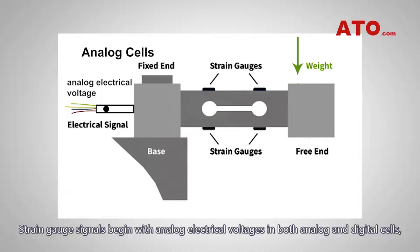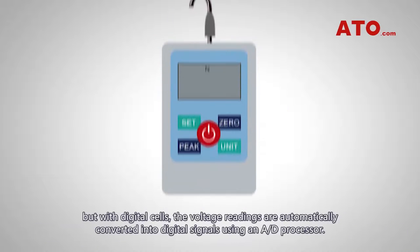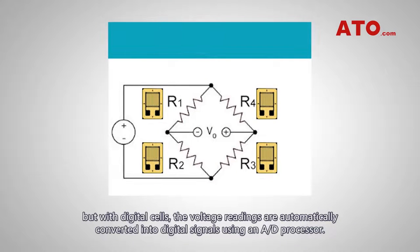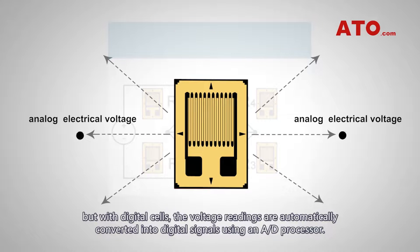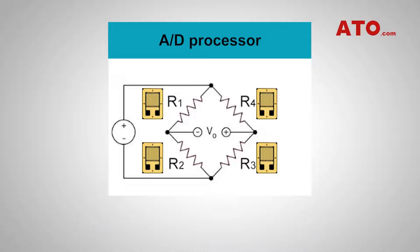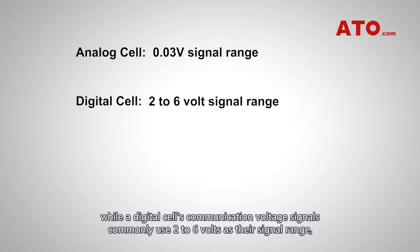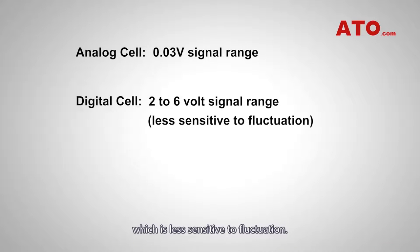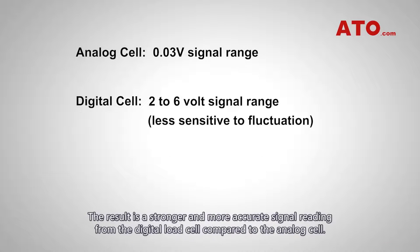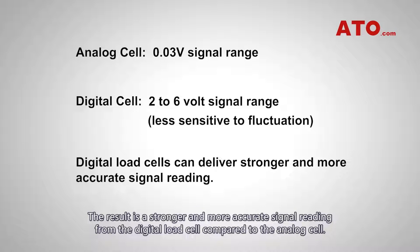Strain gauge signals begin with analog electrical voltages in both analog and digital cells. But with digital cells, the voltage readings are automatically converted into digital signals using an analog-to-digital process. The analog cell has a very low magnitude of 0.03 volt signal, while a digital cell's communication voltage signals commonly use 2 to 6 volts, which is less sensitive to fluctuation. The result is a stronger and more accurate signal reading from the digital load cell compared to the analog cell.